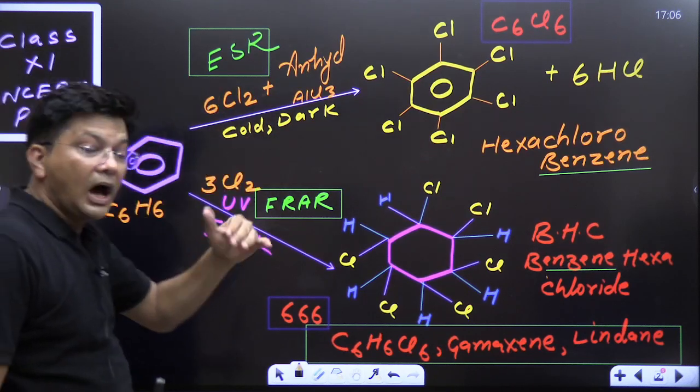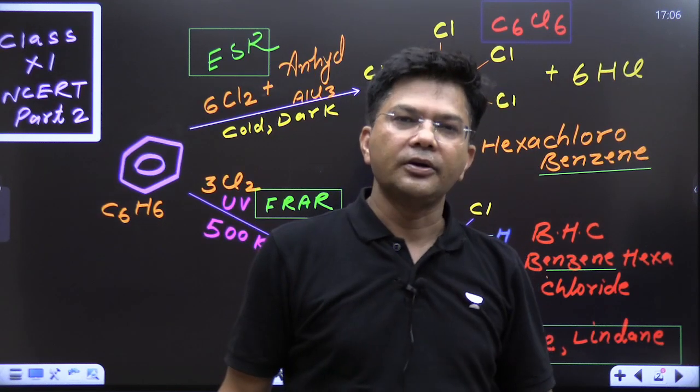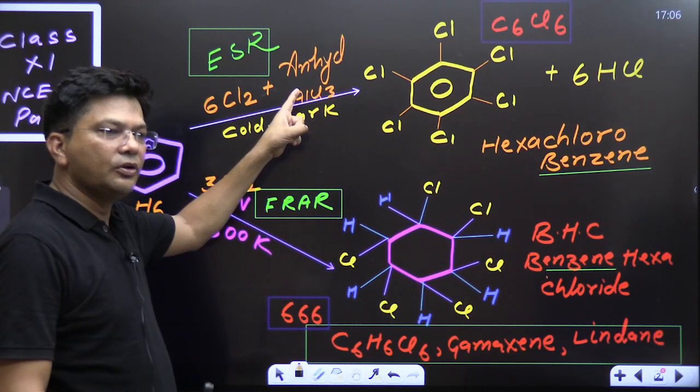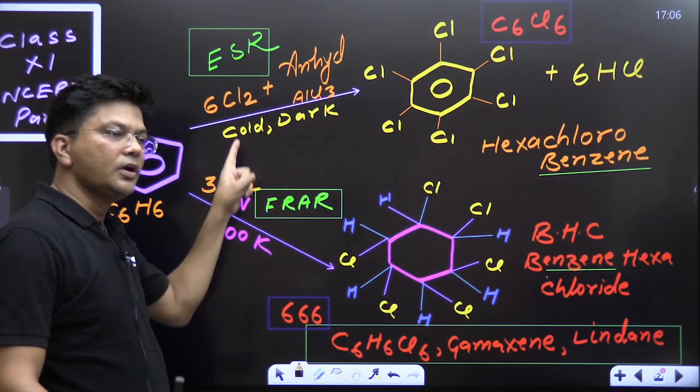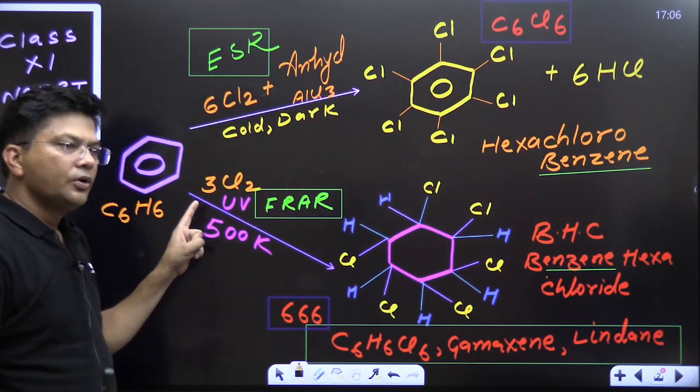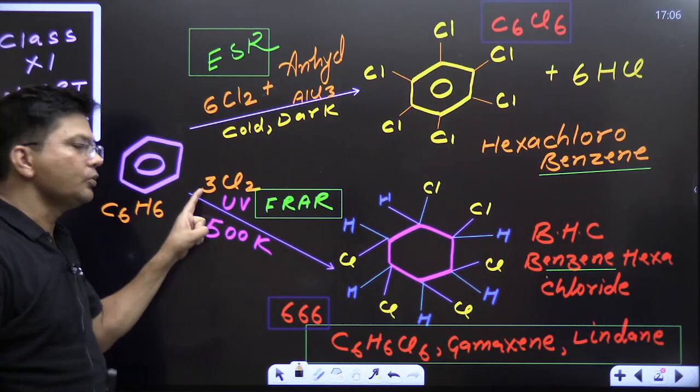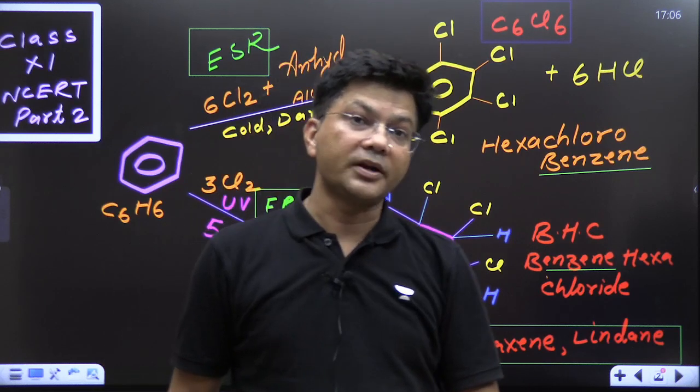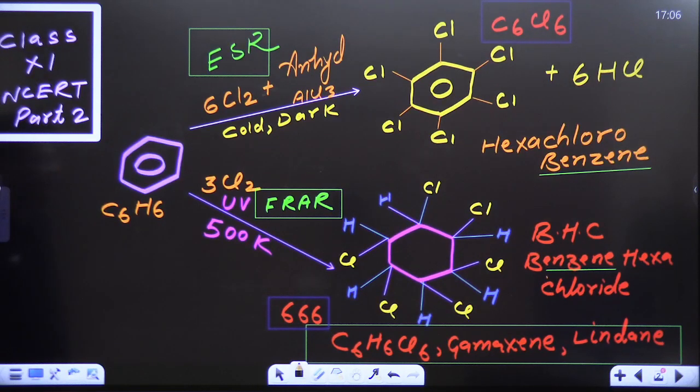This reaction is now how to find out in the examination that which product you are supposed to prepare. Whenever anhydrous AlCl3, this Lewis acid is given, do substitution. And this reaction is carried out in dark and cold. But whenever the sunlight is there or 500 Kelvin temperature means you can say high temperature or sunlight presence, that is going to do free radical addition reaction. So, this is very, very important reaction and it is given in class 11th NCERT part 2. You can see your NCERT.